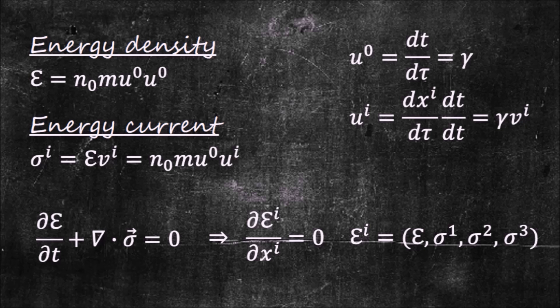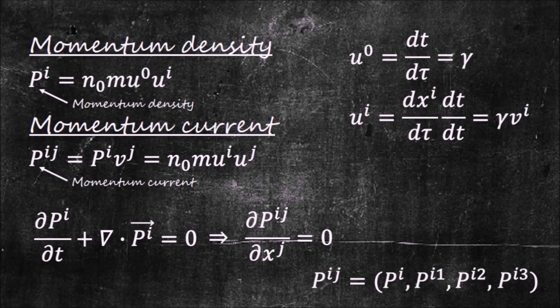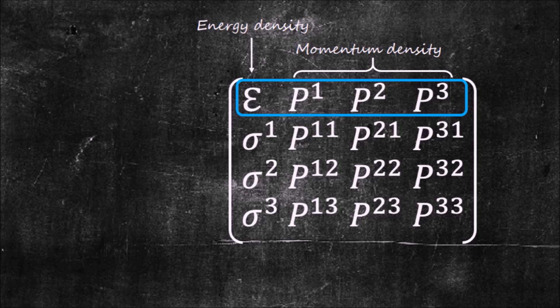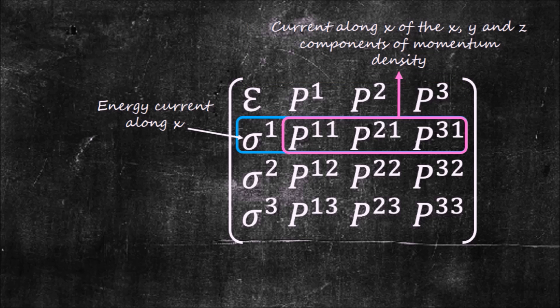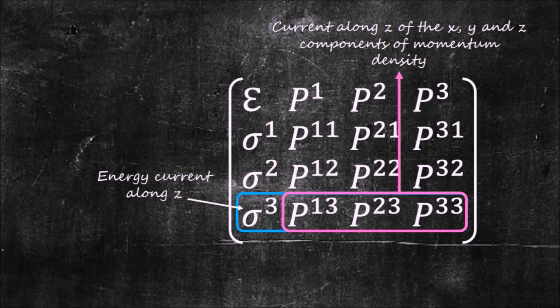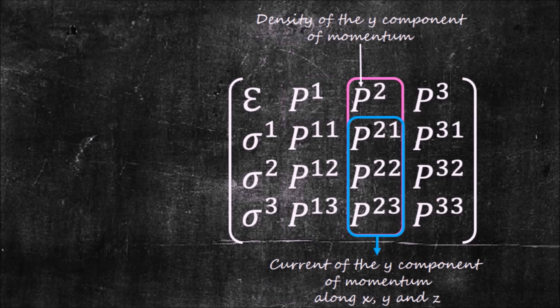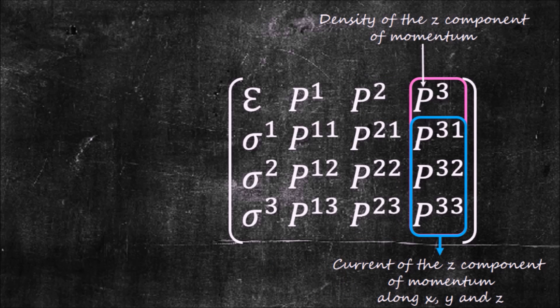We can repeat this same analysis for each component of the momentum density. Let us arrange the energy momentum densities and currents in a matrix. In the first row, we have the density of energy and the three components of the momentum density vector. The second row gives the current along the x-direction of the energy density and of the three components of the momentum density. The third and fourth row give the same as row 2, but in the y and z-direction. The first column lists the energy density and energy current along the three spatial directions. The other three columns list the momentum density and the momentum currents for the x, y and z components of the momenta along the x, y and z directions.